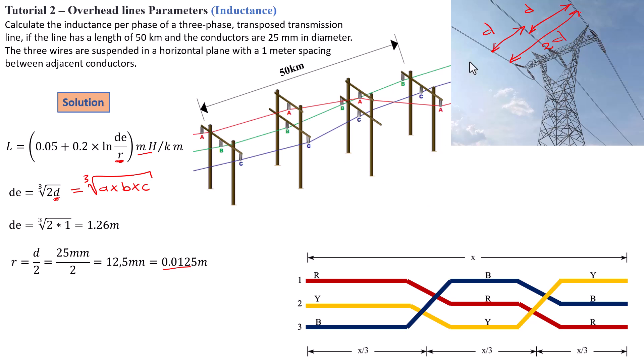So that is why it is very important to know your overhead line parameters. Now, let's continue our calculation here. After you've calculated your radius, all you have to do next is to basically replace your calculated dE and your calculated R into your main formula for your inductance parameter.